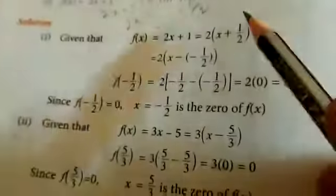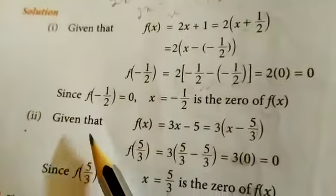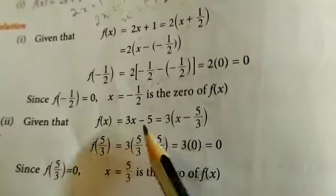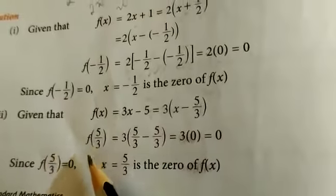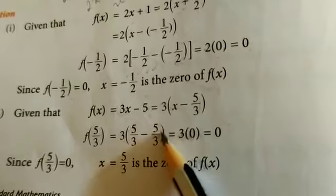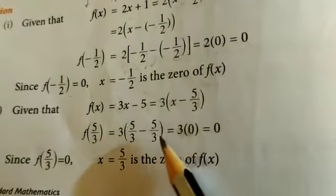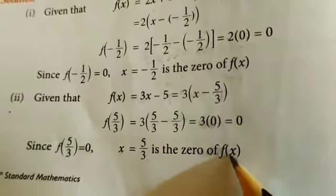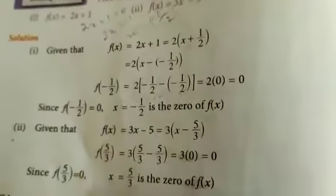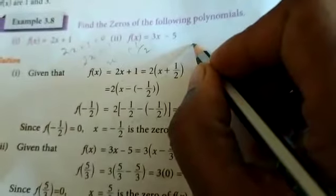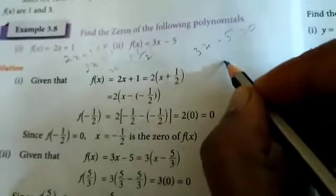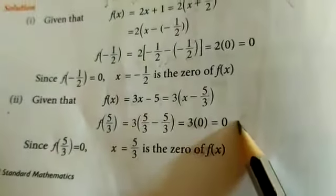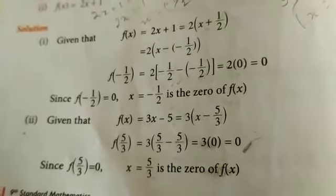For the second sum, f of x equal to 3x minus 5. Setting 3x minus 5 equal to 0 gives x equal to 5 by 3. Verifying: f of 5 by 3 equal to 3 into 5 by 3 minus 5, which simplifies to 5 minus 5 equal to 0. Since f of 5 by 3 equal to 0, x equal to 5 by 3 is the zero of f of x.